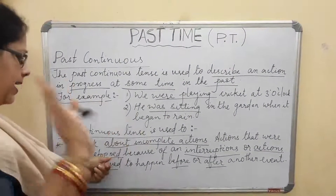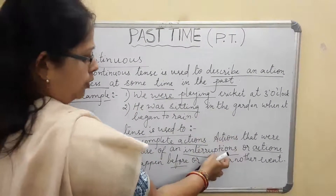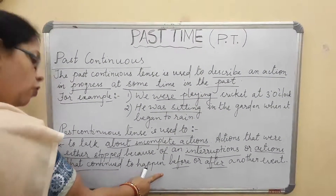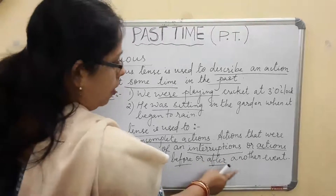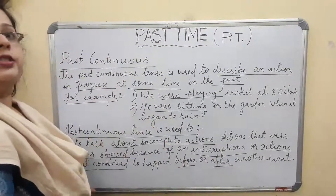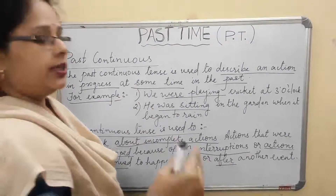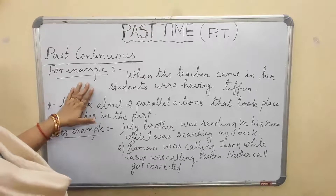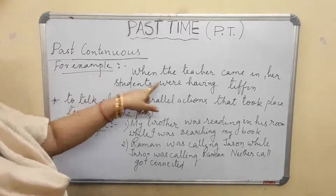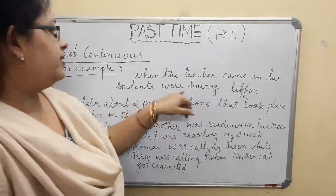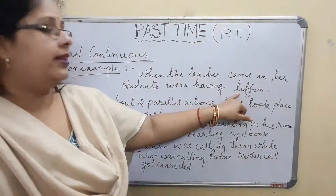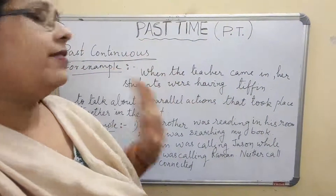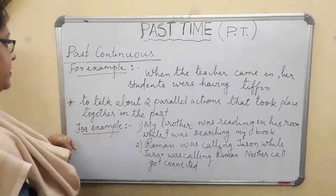Actions that were stopped due to some interruption, or actions that continued happening before or after another event. For example: 'When the teacher came in, her students were having tiffin.' That means when the teacher entered the class, the students were still continuing to eat their tiffin — one action happening alongside another.